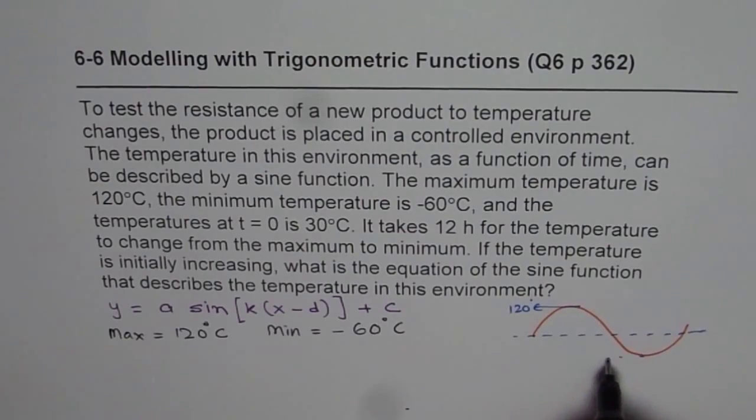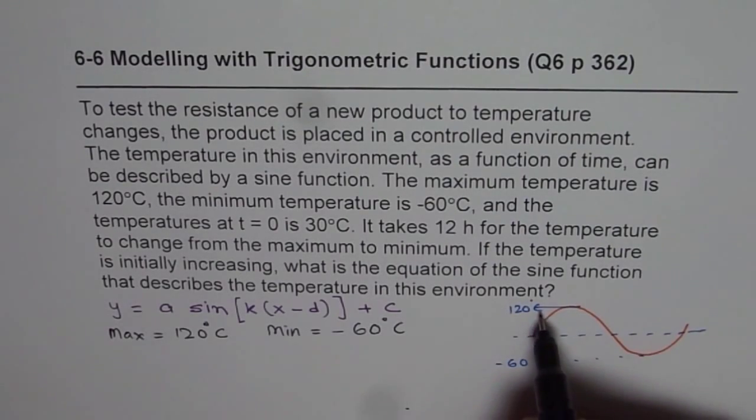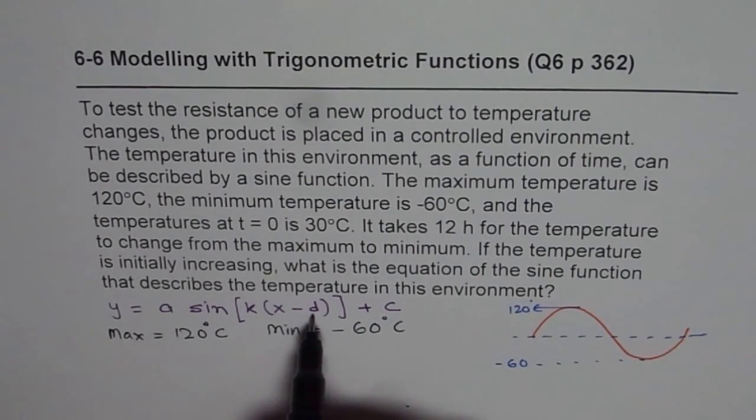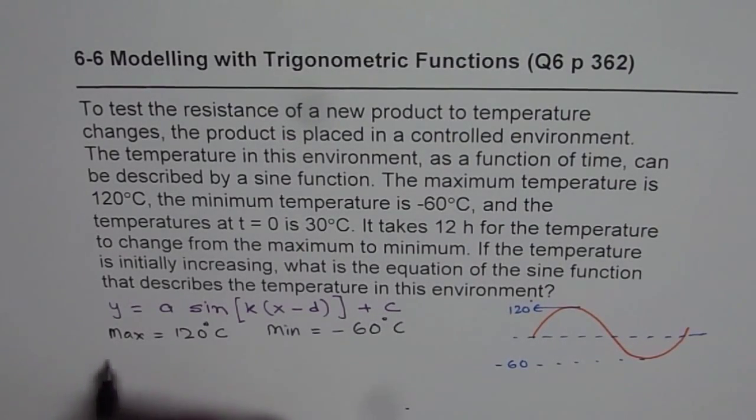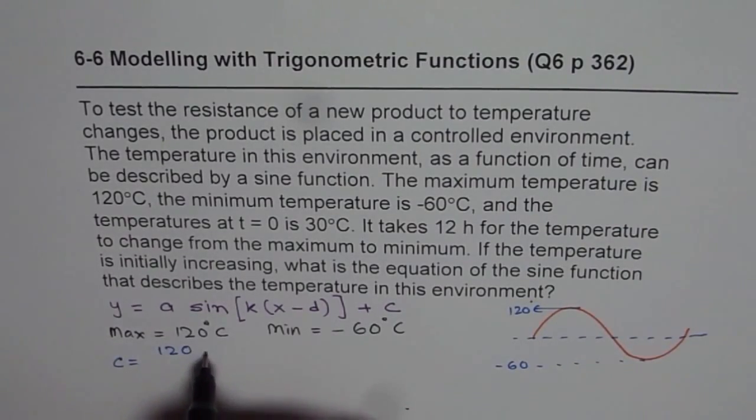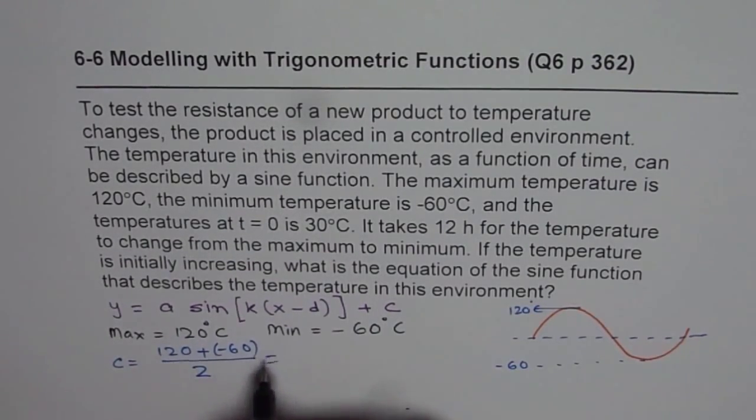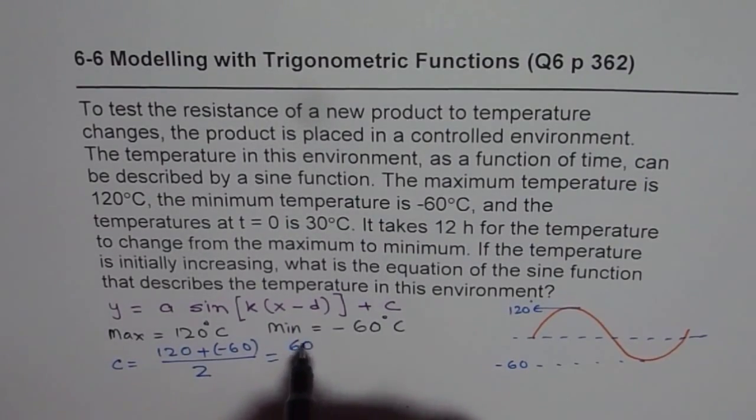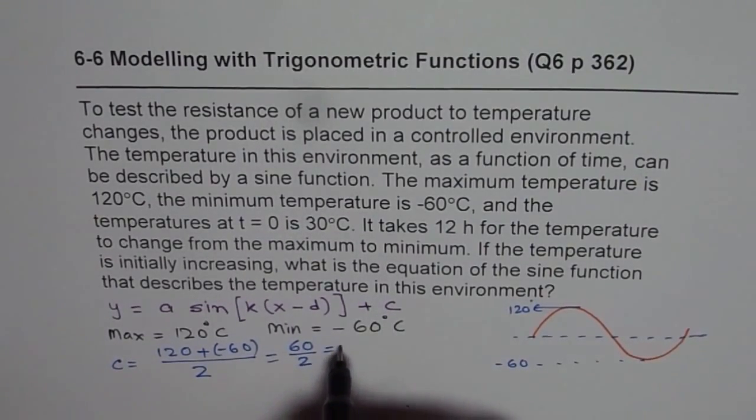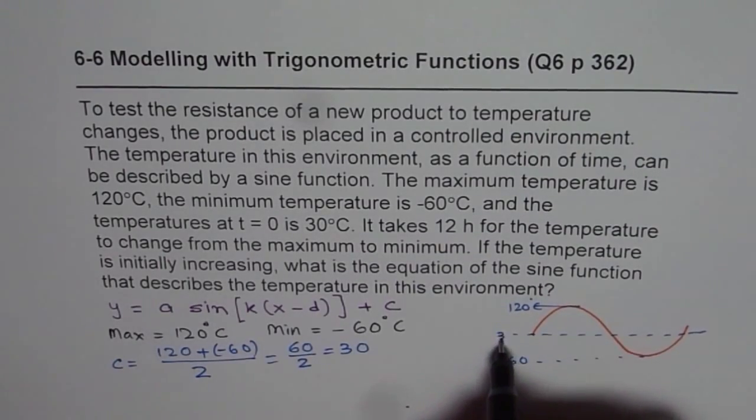The mean or the average of these two is the axis c. So c equals 120 plus minus 60 divided by 2, which gives you 120 minus 60 is 60 divided by 2, which is 30. This is 30 for us.